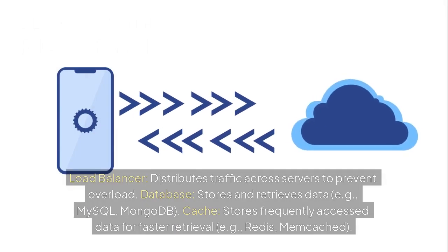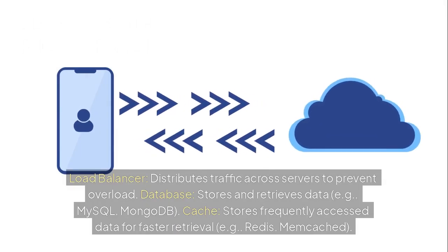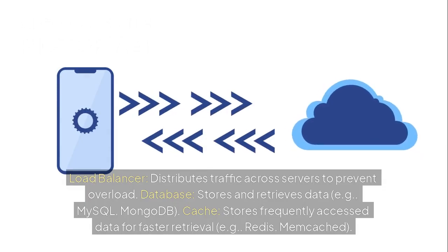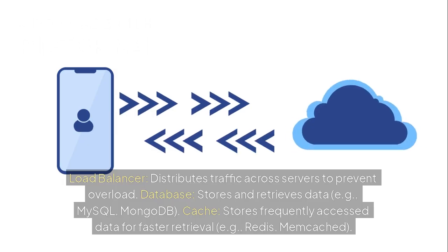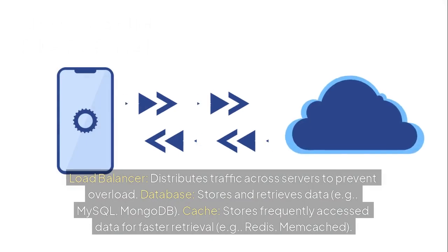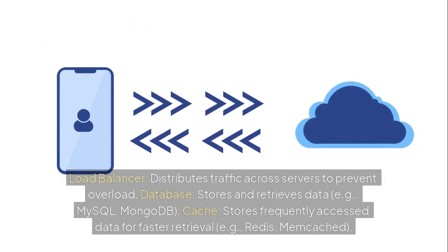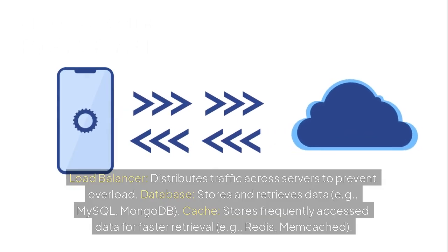Load balancer distributes traffic across servers to prevent overload. Database stores and retrieves data, like MySQL or MongoDB. Cache stores frequently accessed data for faster retrieval, like Redis or Memcached.